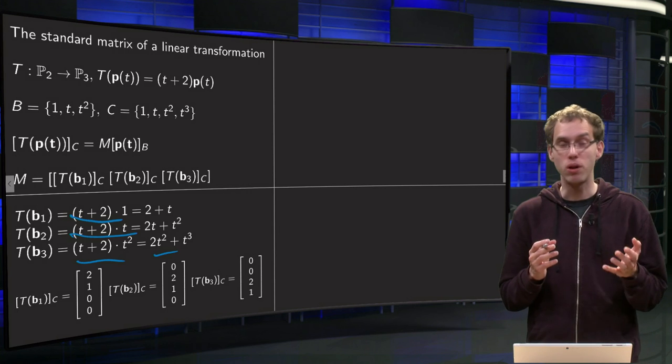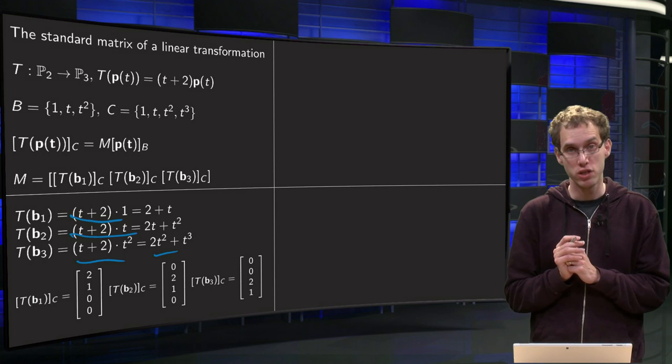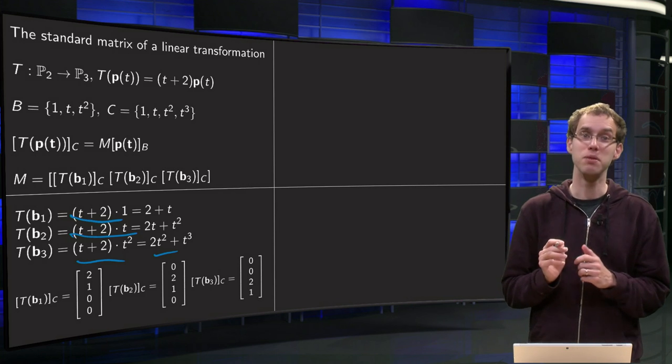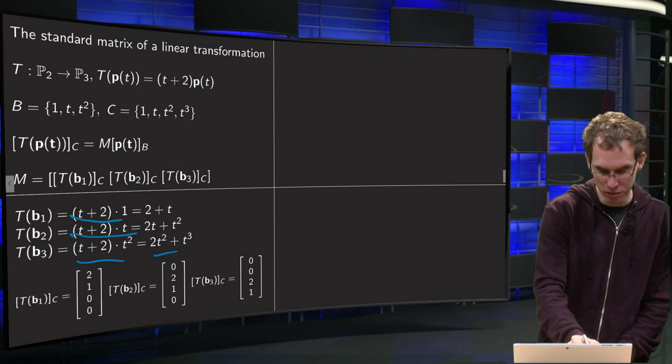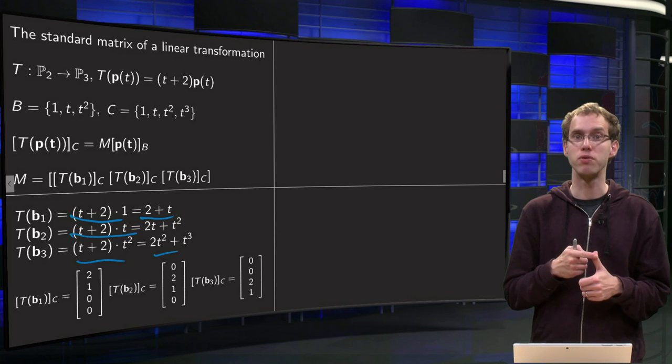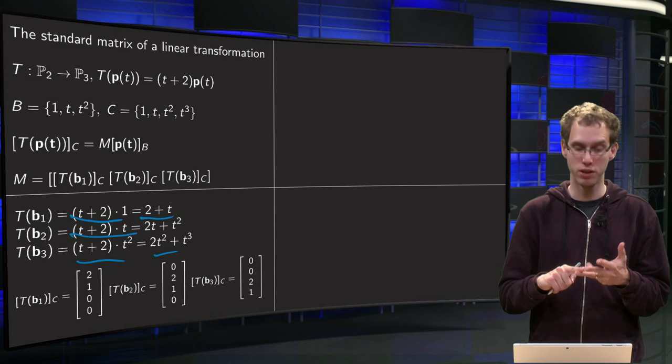And then we don't want the T(b₁) etc. But we want them in the basis C. Fortunately that is easy because that is a standard basis. So for example T(b₁) over here in the basis C equals 2 times 1 plus 1 times t plus 0 times t² plus 0 times t³.